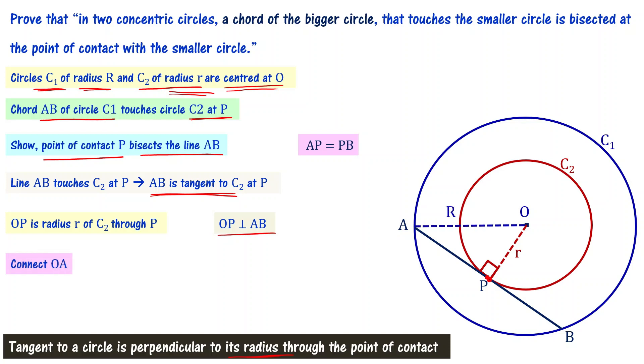Now, let me connect O, A. That is the radius of the bigger circle, denoted using capital R. OP is small r, radius of smaller circle, and OA is capital R. Now, when you look at this triangle, triangle OPA is a right angle triangle.